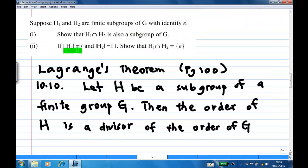Next, if order of H1 is 7, order of H2 is 11, then H1 intersect H2 is only the identity element.